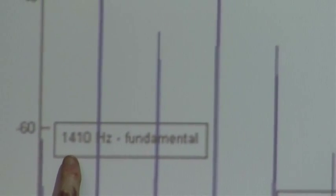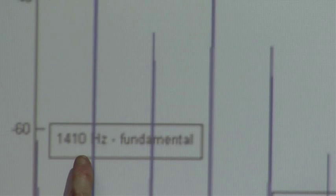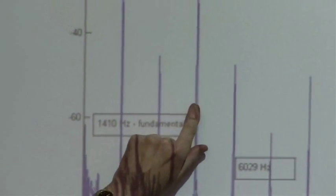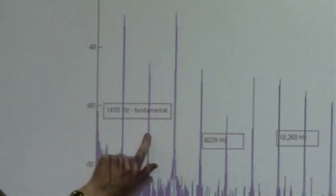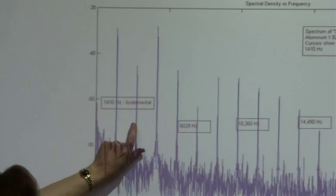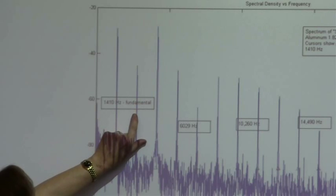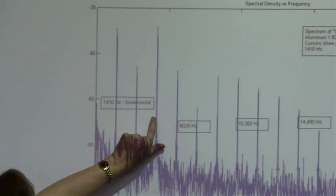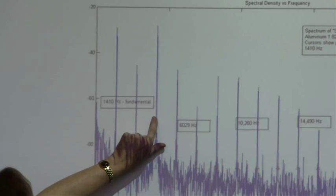And here's the lowest frequency. This is the fundamental. And it has a frequency of 1410 hertz. So about 1.4 kilohertz for the fundamental. And you notice these are equal multiples of the fundamental. So this one right here at twice the frequency of the fundamental. That's the second harmonic.